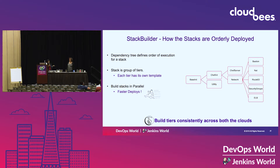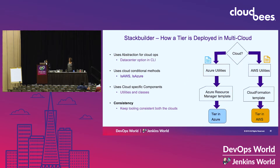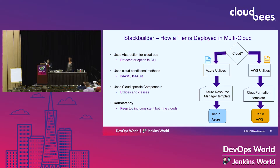The same lesson applies: keep the configuration consistent across both clouds. To summarize how a tier is deployed in multi-cloud using Stack Builder: it uses abstraction for cloud operations via the data center option in the command line, cloud conditional methods such as isAWS and isAzure, cloud-specific components and utilities using inheritance, and most importantly, keeping the tooling consistent for both clouds.